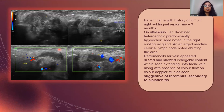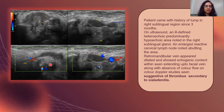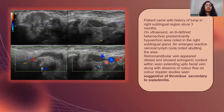In another case, we had a patient with a history of lump in the right sublingual region since three months. On ultrasound, we could see an ill-defined heterechoic predominantly hyperechoic area in the right sublingual gland and an enlarged reactive lymph node adjacent to it. On further evaluation, the retromandibular vein and the facial vein appeared dilated, showing echogenic content within with paucity of color on color Doppler studies. All these features were indicative of a thrombus secondary to sialadenitis within the gland.